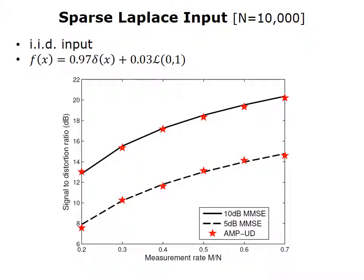We now provide three sets of numerical results. The first is for an IID sparse Laplace input: the signal has length 10,000, is zero 97% of the time, and the rest of the time follows a Laplace distribution. The horizontal axis shows the measurement rate (the aspect ratio of the matrix), and the vertical axis shows the reconstruction quality. The two black lines are the minimum mean square error — the best possible reconstruction quality. The red stars, which are the empirical performance of AMP-UD, sit very nicely on the black curves, showing that AMP-UD performs very well in reconstructing IID inputs.